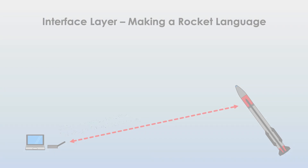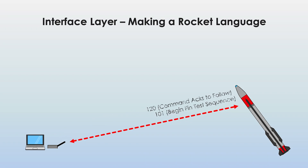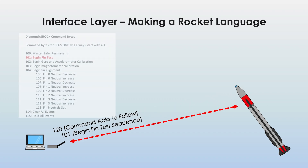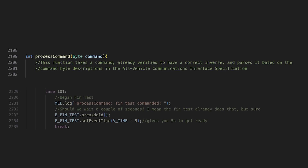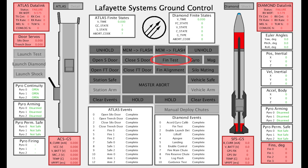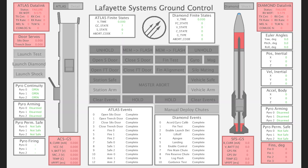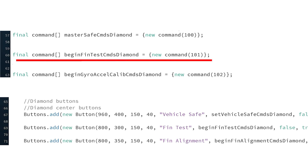If I want the rocket to do something like test its fins, for example, I send it a command from the ground station. In the word document I list what all these commands are and assign each one a different number. In the case of a fin test, that number is 101 decimal. If the rocket receives command 101 it executes a series of processing functions which end with its control state being changed to control fin test. Then I have to make sure that when I push the appropriate button on the GCS it sends command 101 over the radio. As long as I don't mix up anything in that process, the whole thing works out.